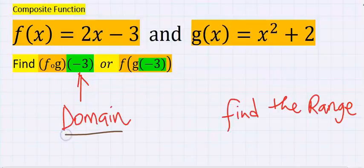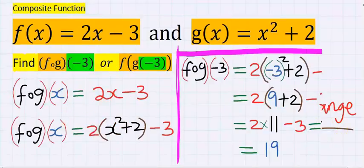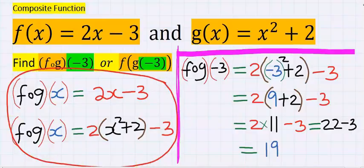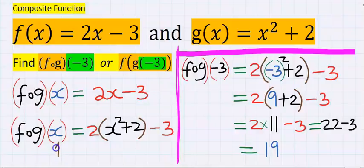Subsequently, let's consider a domain of minus 3 to find the range. To solve this problem, the first step is find the composition of the function. Next, in place of x, substitute minus 3 according to the question. When you solve this carefully, your answer is 19.